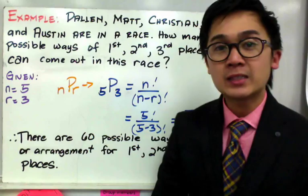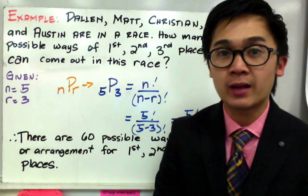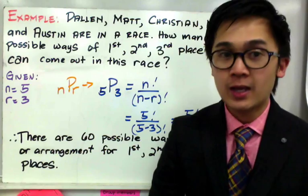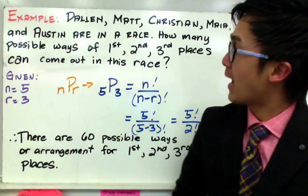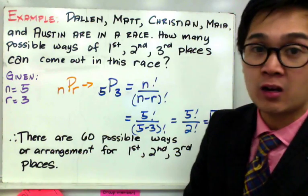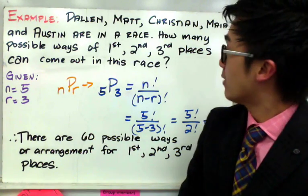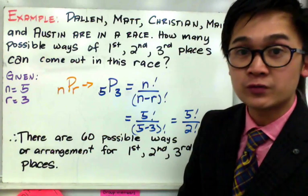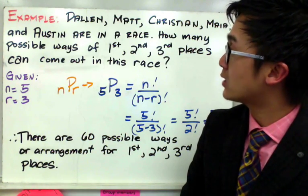Now let's have a word problem associated with counting arrangements. So in this example, I have Dallin, Matt, Christian, Maya, and Austin and they are all in a race. Now in this race, we are concerned to find how many possible ways of 1st, 2nd, and 3rd places can come out in this race.